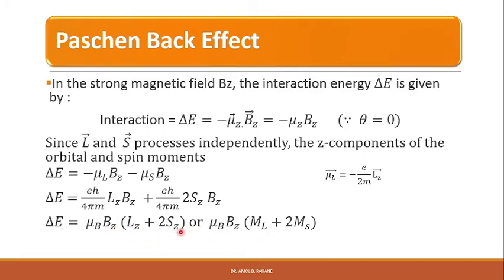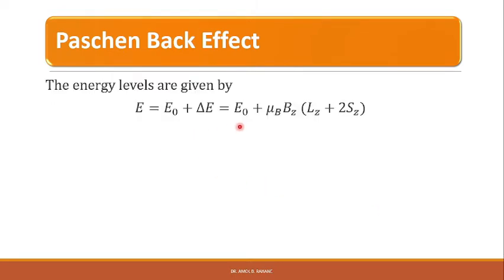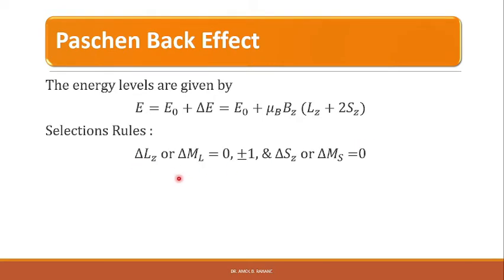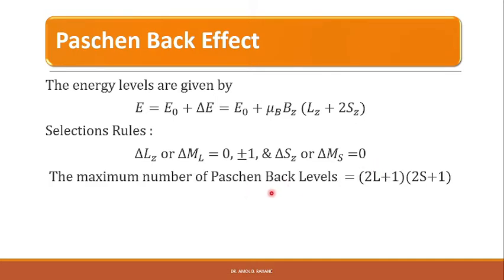ML and MS are the quantum numbers corresponding to the Z components of L and S respectively. μB = eℏ/4πm is called the Bohr magneton. The energy levels are given by E = E₀ + ΔE = E₀ + μB·BZ·(ML + 2MS). The selection rule for ML is ΔML = 0 or ±1, and the selection rule for MS is ΔMS = 0. The maximum number of Paschen-Back levels is given by (2L+1)(2S+1).